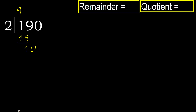2 multiplied by 6 equals 12, which is greater. Try multiply by 5: 2 multiplied by 5 equals 10, which is not greater. Subtract: 10 minus 10 equals 0.